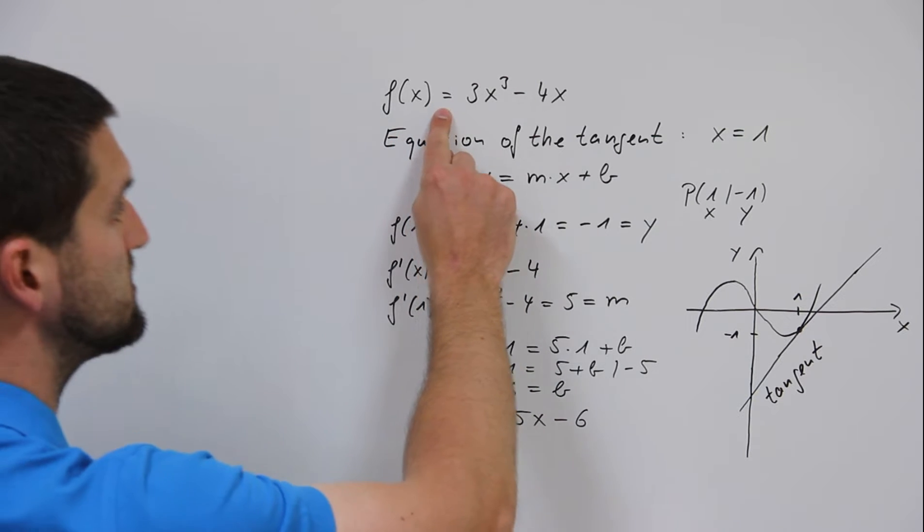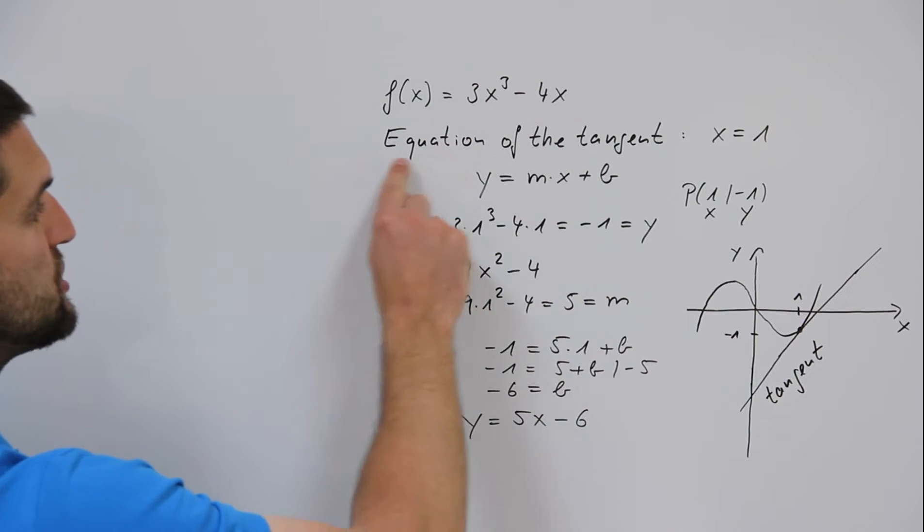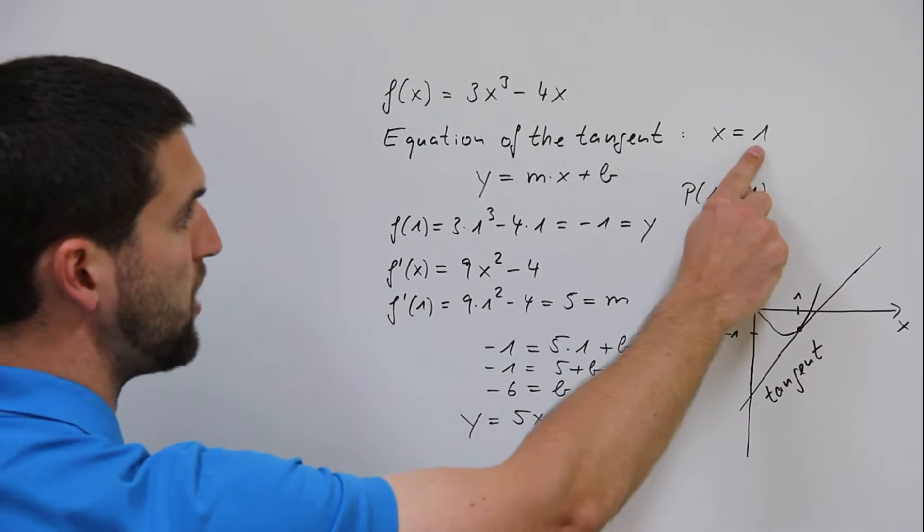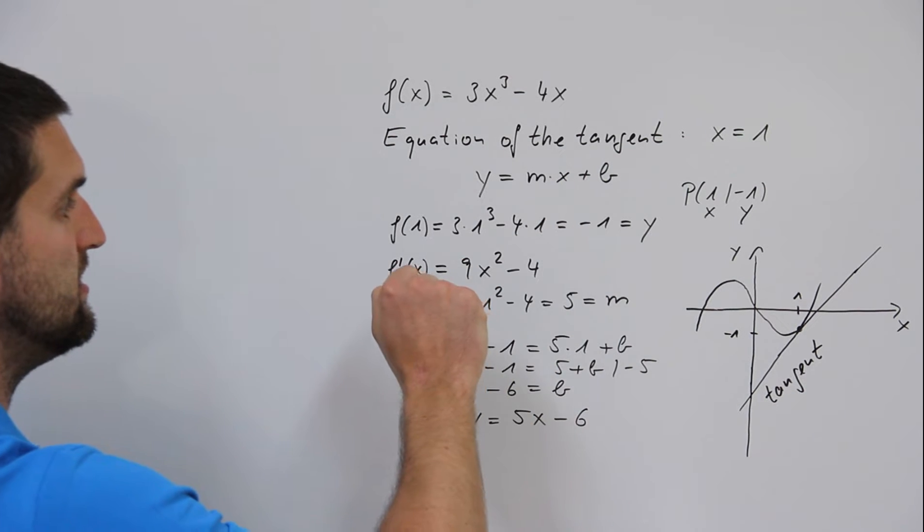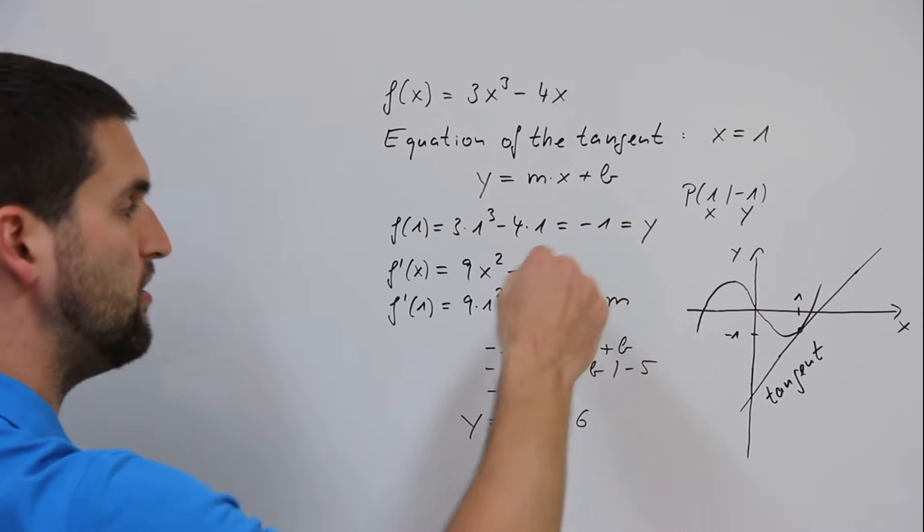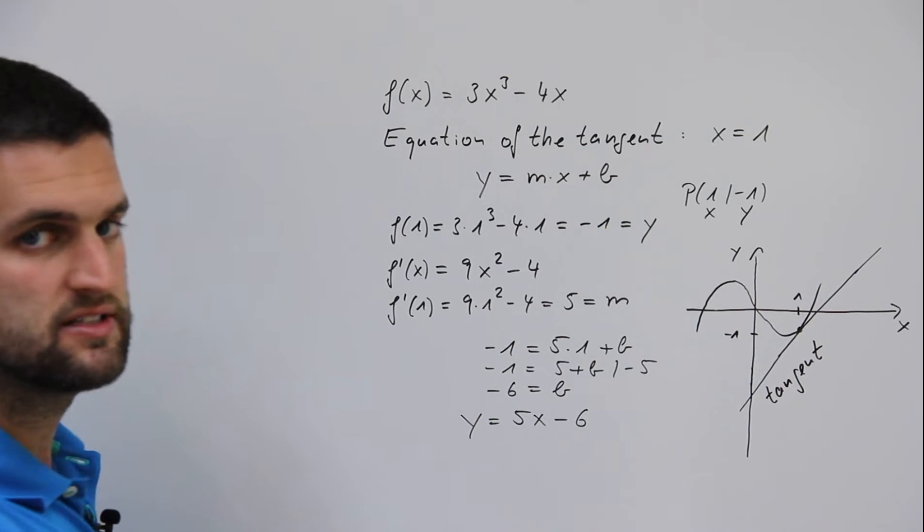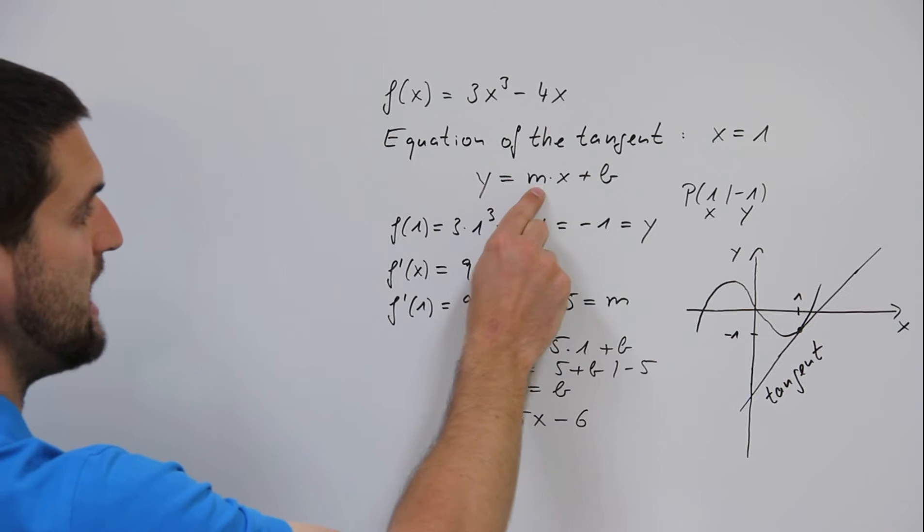So we have f(x) equals 3x³ minus 4x. In general, the equation is y equals mx plus b or mx plus n. I've chosen y equals mx plus b.